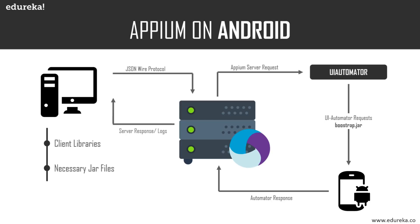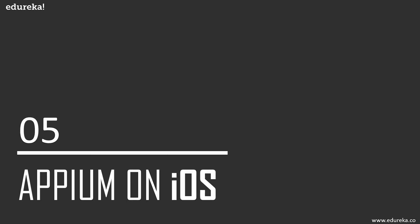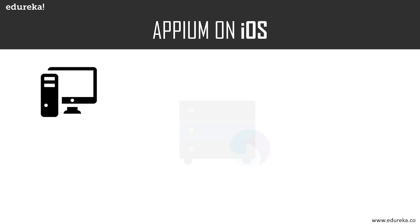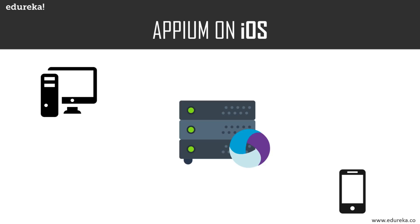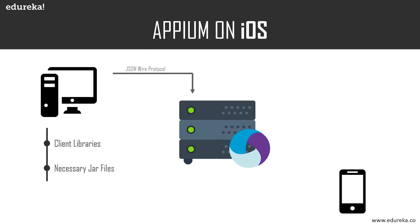So this is exactly how Appium works on Android. Now let's take a look at how Appium works on iOS and how it differs. There's not much difference in the key elements — you have the client on the left, the Appium server in the center, and the iOS device on the right, which could be an emulator, simulator, or real device. The client must have the necessary client libraries and JAR files. The Appium client then connects to the Appium server using the JSON wire protocol and sends all the desired capabilities.